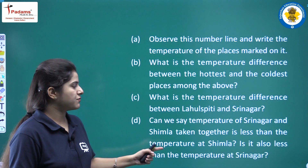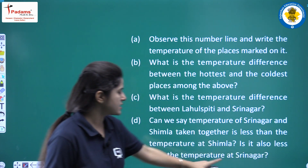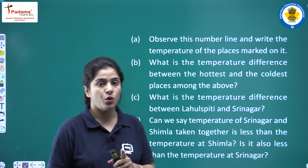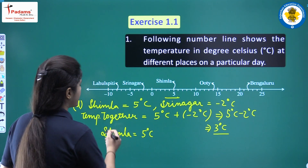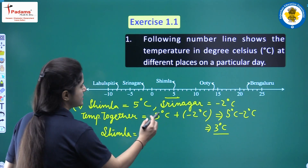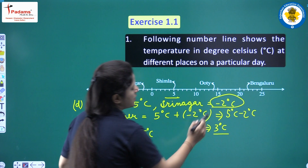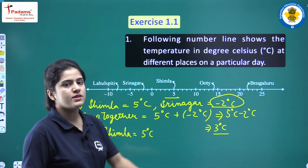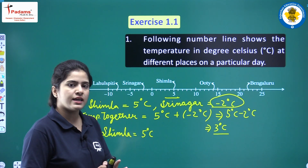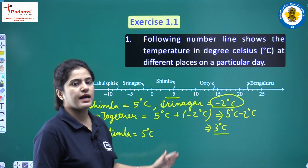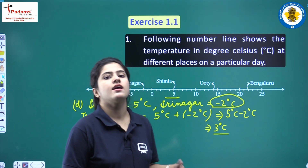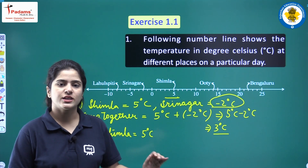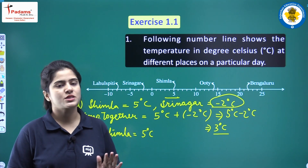And in the next part, is it also less than the temperature at Srinagar? No, it is not. Because Srinagar's temperature is minus 2, and 3 degrees Celsius is greater than minus 2. So we can say that the temperature of Shimla and Srinagar taken together is greater than that of Srinagar. This was your first question.